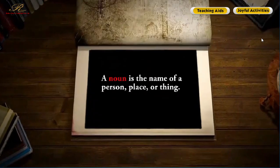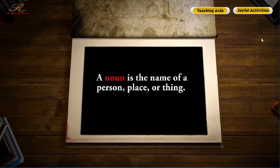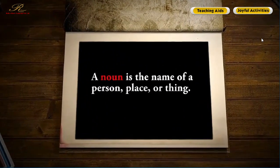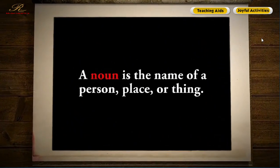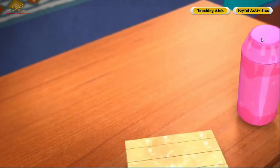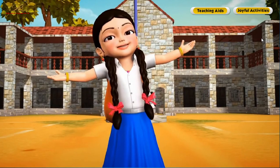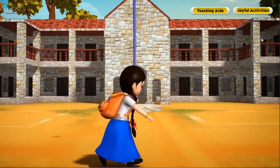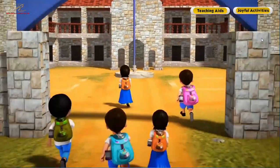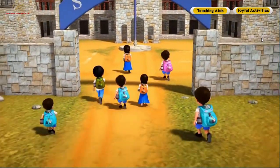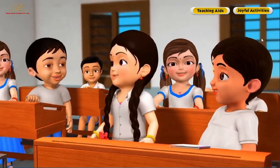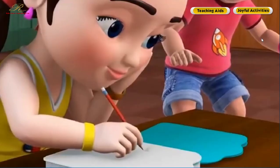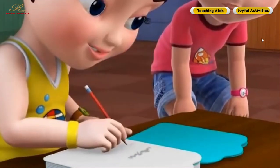Nouns. A noun is the name of a person, place, or thing. For example, Aashima is a person, school is a place, and pencil is a thing.